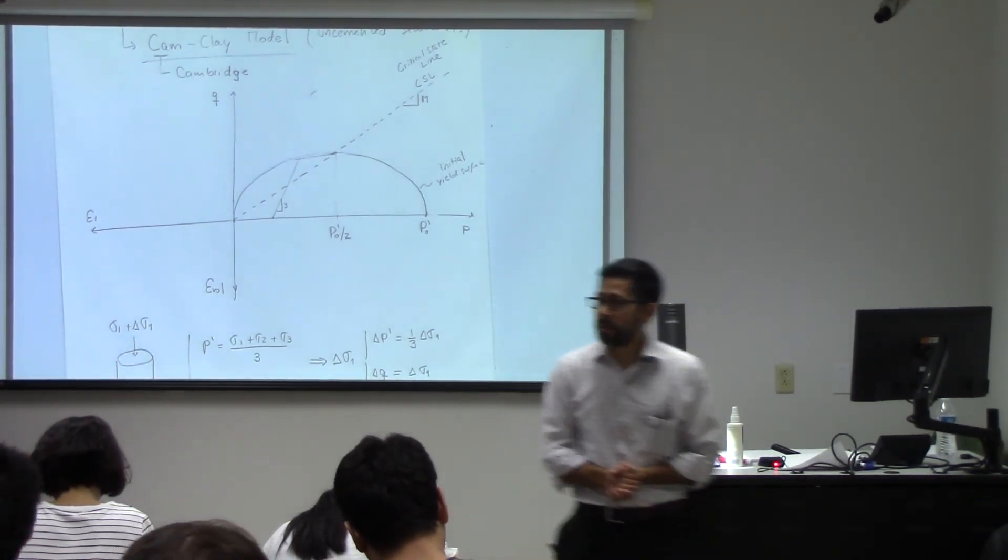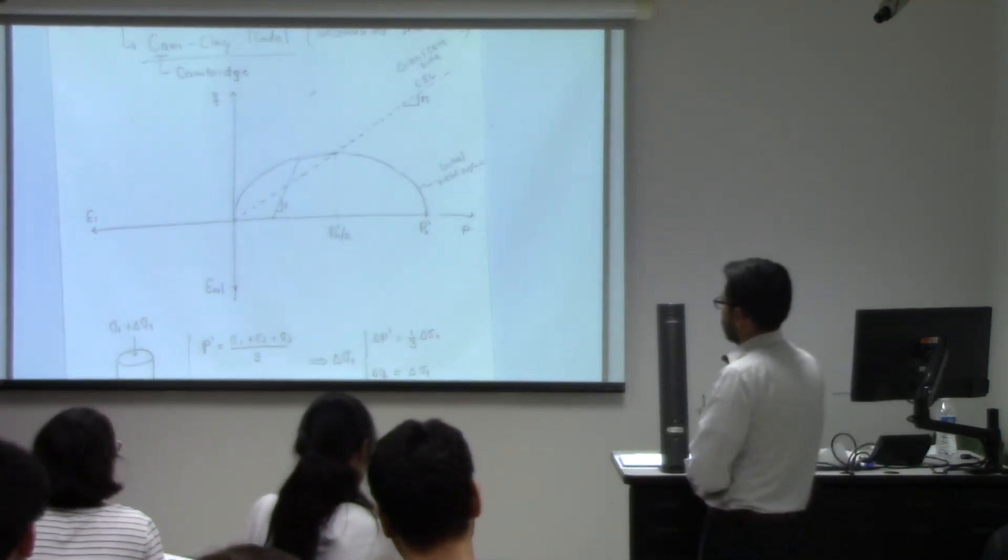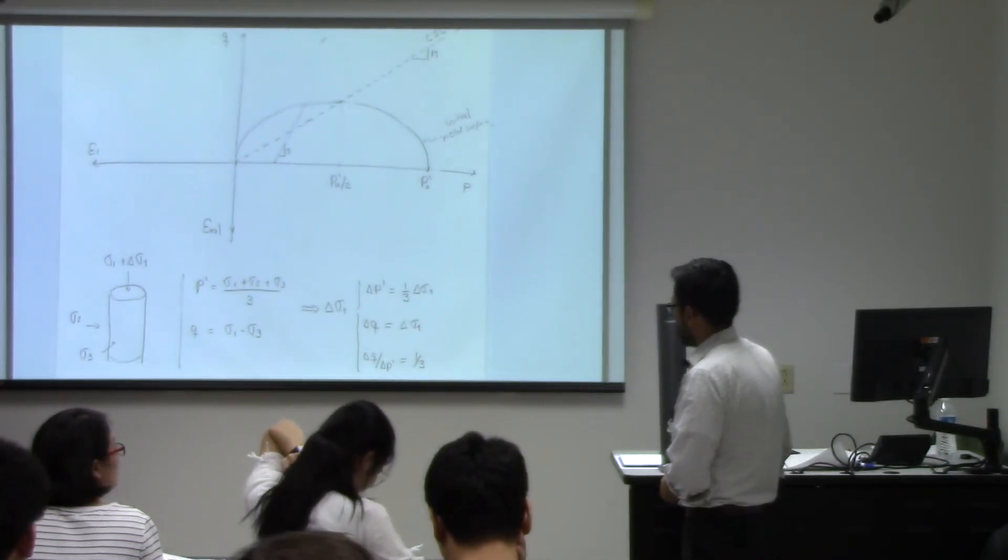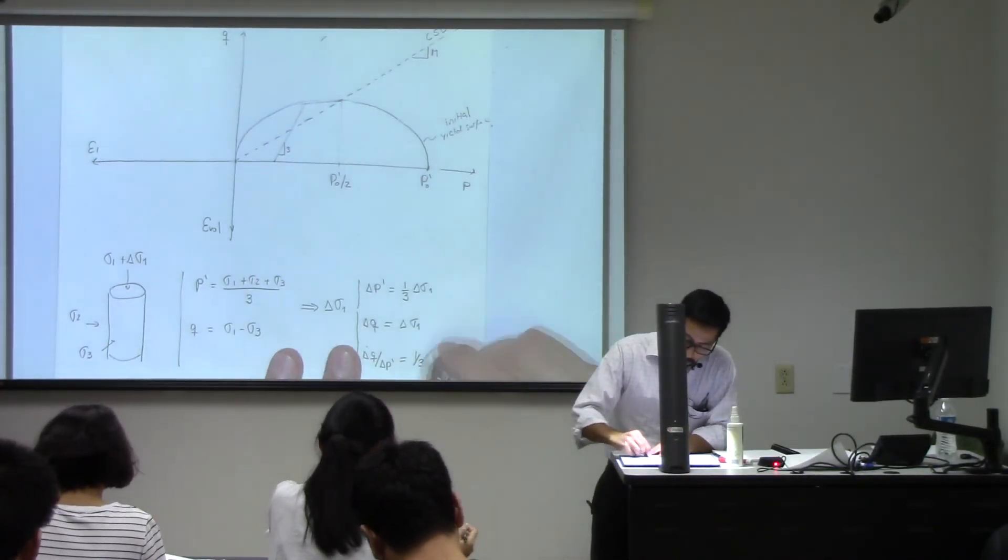Okay? So, yes? You mentioned that delta Q over delta P prime equals one third, shouldn't that be three? Yes, thank you. Yeah, that's equal to three.